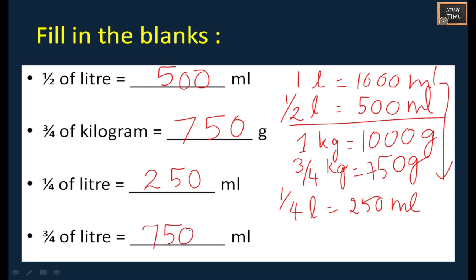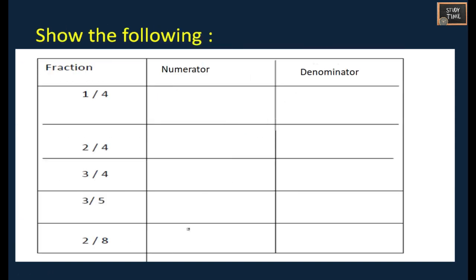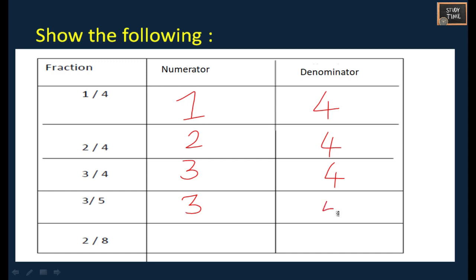Next: a fraction is given and you have to write the numerator and denominator. The number above the line is the numerator and the number below the line is the denominator. For 2 divided by 4: numerator is 2, denominator is 4. For 3 divided by 4: numerator is 3, denominator is 4. For 3 divided by 5: numerator is 3, denominator is 5. For 2 divided by 8: numerator is 2, denominator is 8.